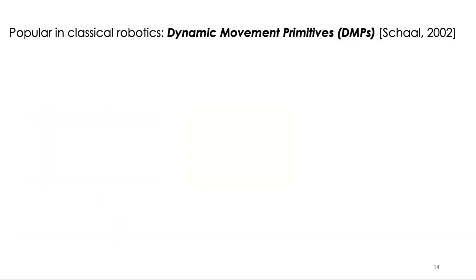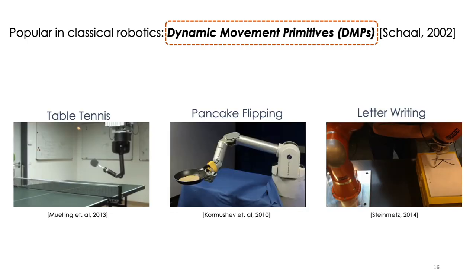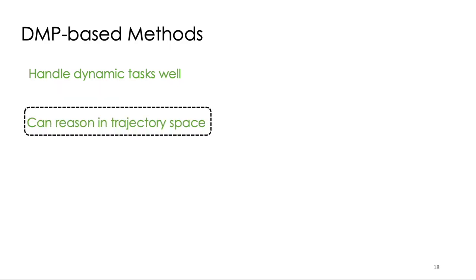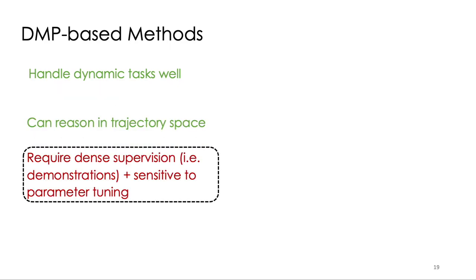Indeed, people have thought about how to use such structure for defining trajectories in classical robotics. For instance, the seminal work on Dynamic Movement Primitives, or DMPs, has been very successful in allowing robots to perform real-world tasks. These DMP-based methods can handle dynamic tasks really well, and they can reason in trajectory space. However, most approaches require dense supervision, usually from structured human demonstrations, and these can be very sensitive to hand-engineered parameter tuning.